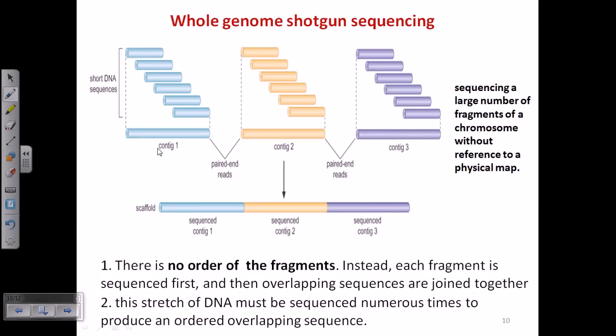Now on the other hand we have whole genome shotgun sequencing. In this kind of sequencing the basic idea is to sequence a large number of fragments of chromosome without reference to a physical map.